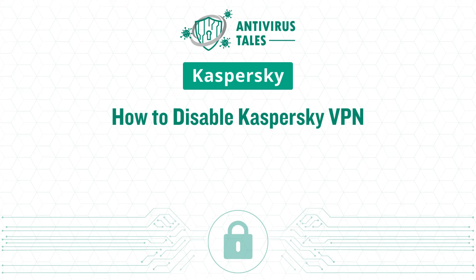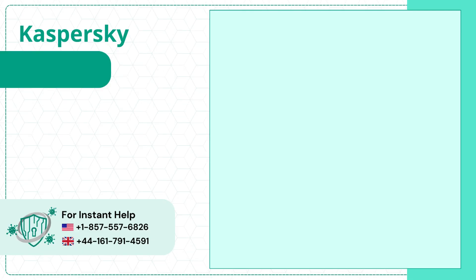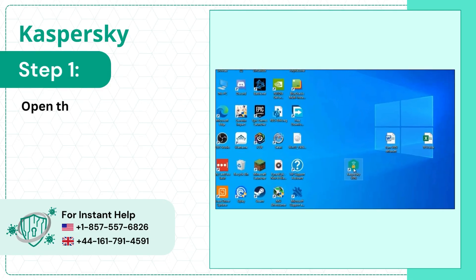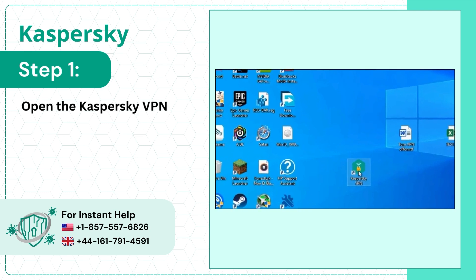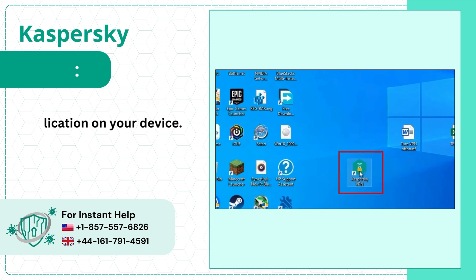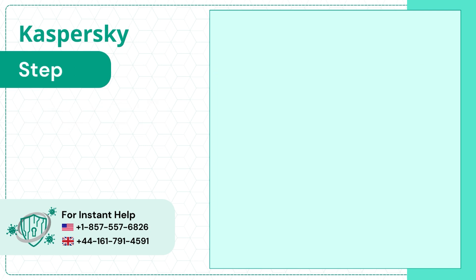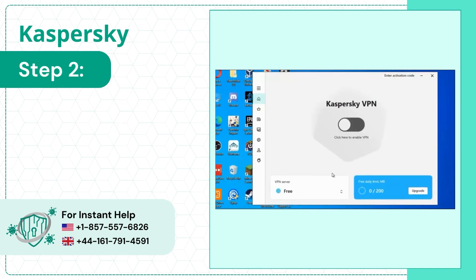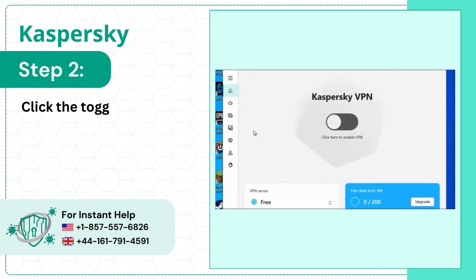How to Disable Kaspersky VPN. Step 1: Open the Kaspersky VPN application on your device. Step 2: Click the toggle to disable VPN.